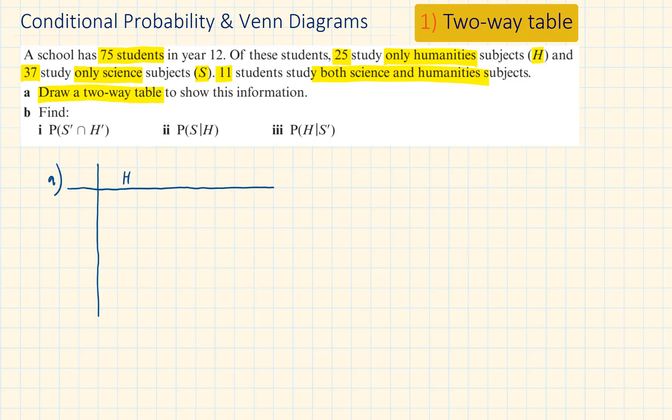The column H represents the number of students who study humanities and the column labelled H with an apostrophe represents the number of students who don't study humanities. And the rows S and S with an apostrophe represent the number of students who take science. And of course we also need the total.